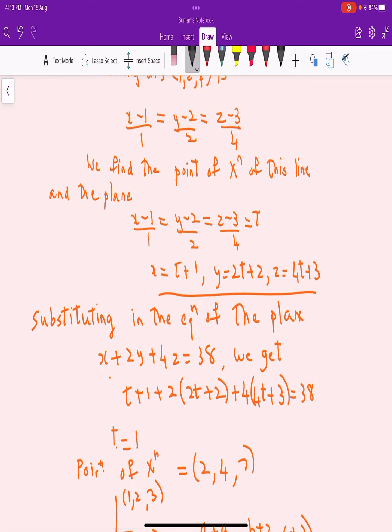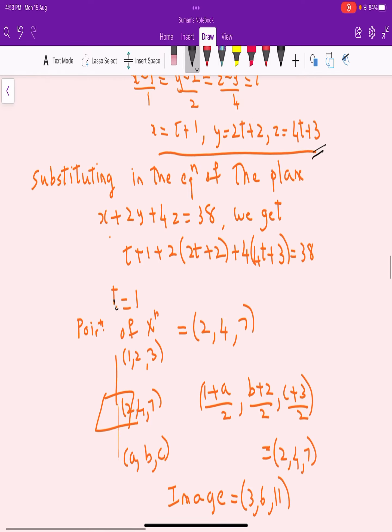We get t = 1, and when we substitute, the point of intersection will be (2, 4, 7). This point will be the midpoint of the original point and its image.